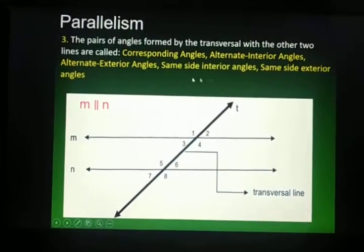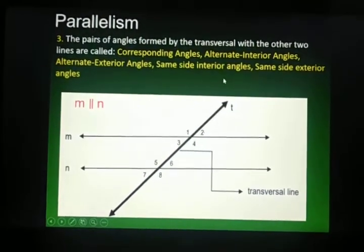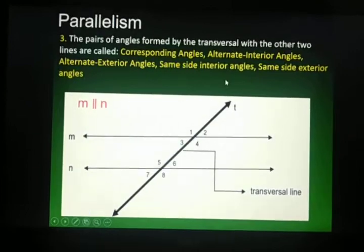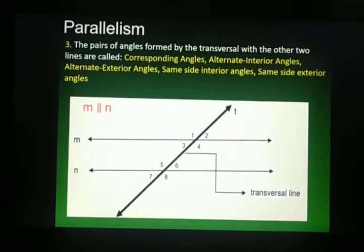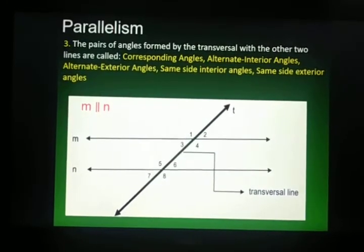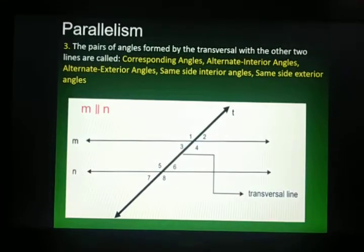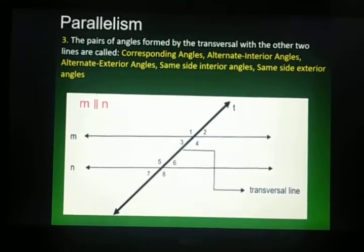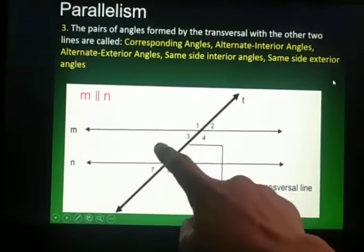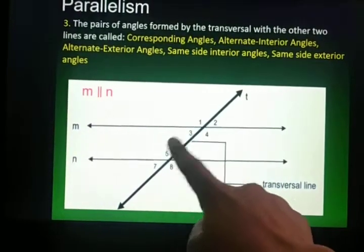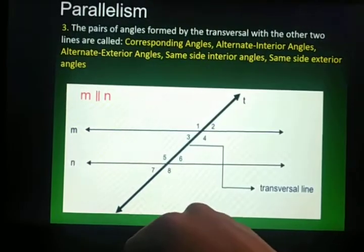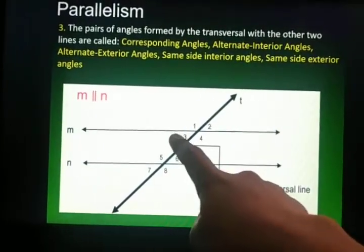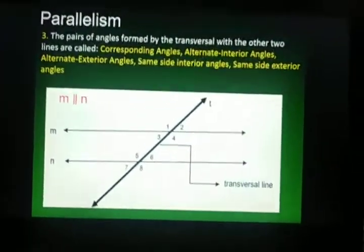Next, same side interior angles. These are angles inside the parallel lines on the same side of the transversal, and they are supplementary. When we say supplementary, the angles are equal to 180 degrees — so when we add them, the sum is 180 degrees. We have angles 3 and 5, and angles 4 and 6. When we add the measurements of angles 3 and 5, they equal 180 degrees. So we have two pairs: angles 3 and 5, and angles 4 and 6.